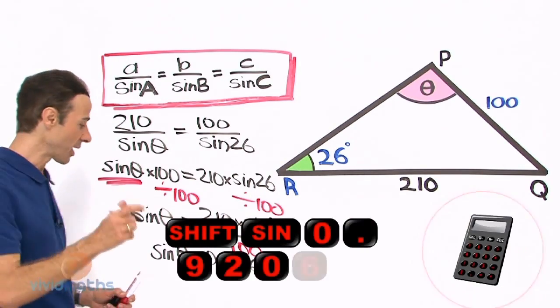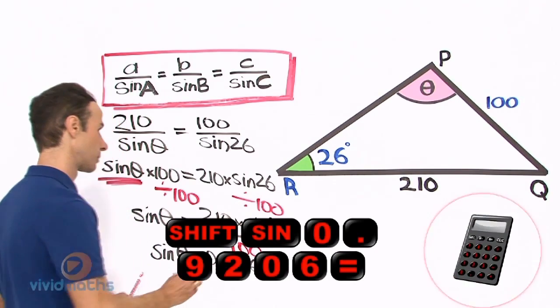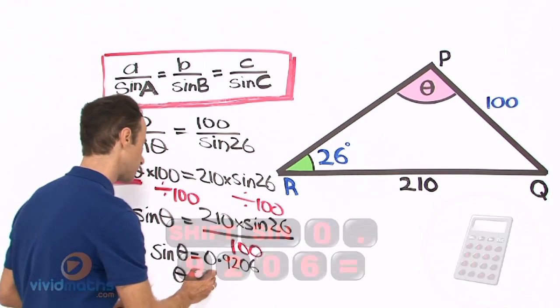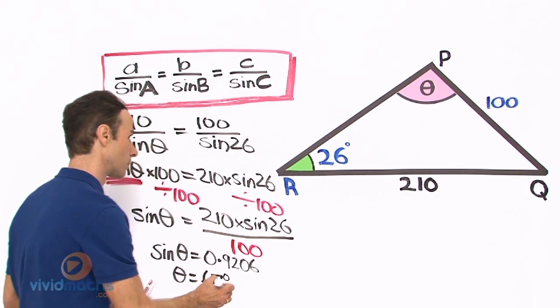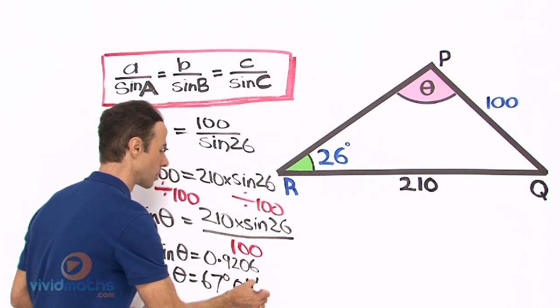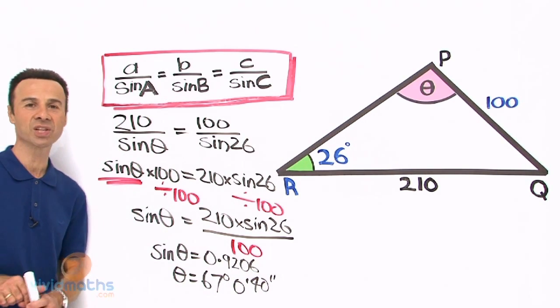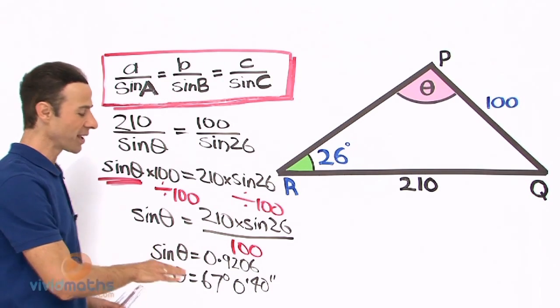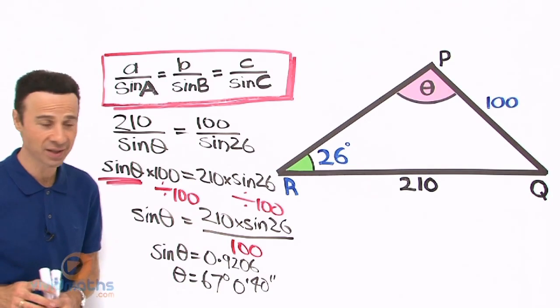Remember just before we got that answer we also press shift DMS or degrees minutes seconds and it will yield 67 degrees 0 minutes 40 seconds.